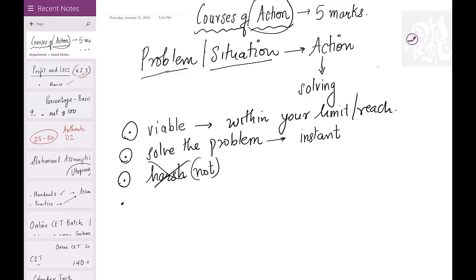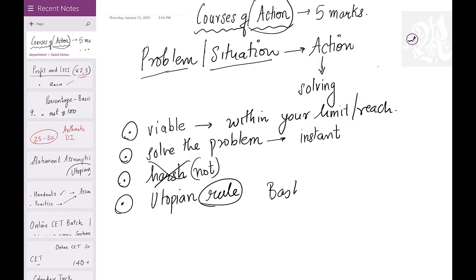The fourth and most important rule is the utopian rule. You must keep yourself in the utopian state and then take a course of action — it's all about being good, kind, and benevolent. For example, if your friend gets run over by a car, you shouldn't pull out the driver and bash him up. Vigilante action is not a valid course of action. So the four rules are: viable, solve the problem almost instantly, not harsh, and the utopian state.